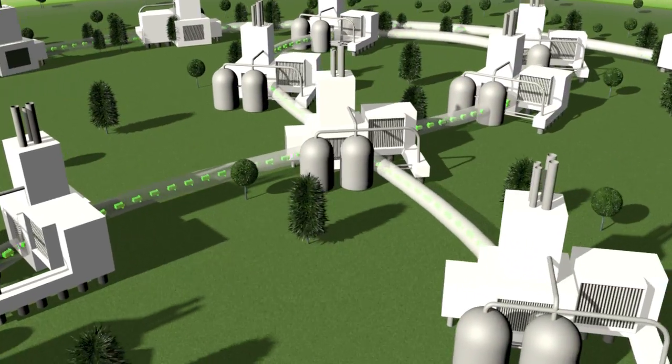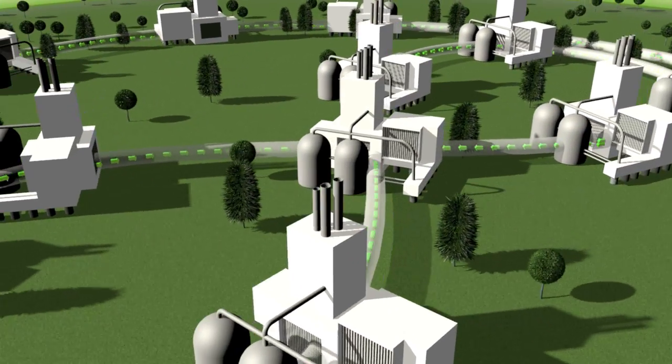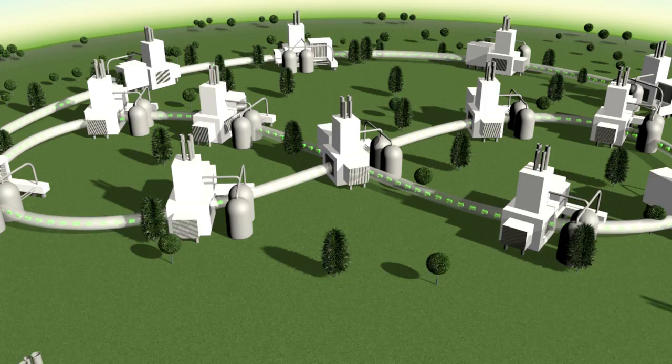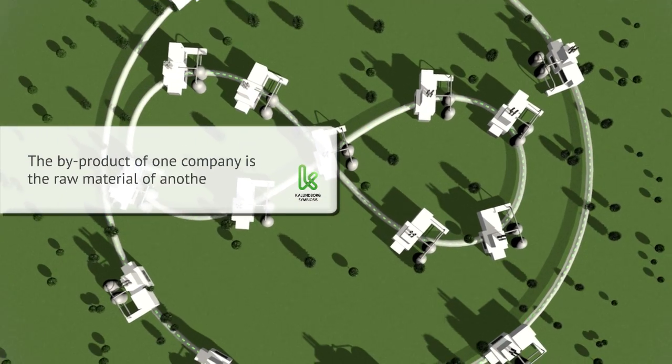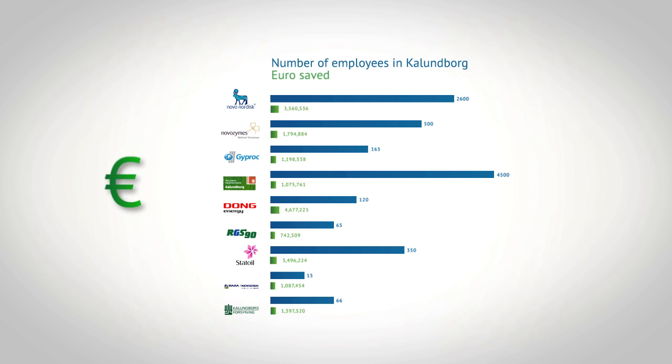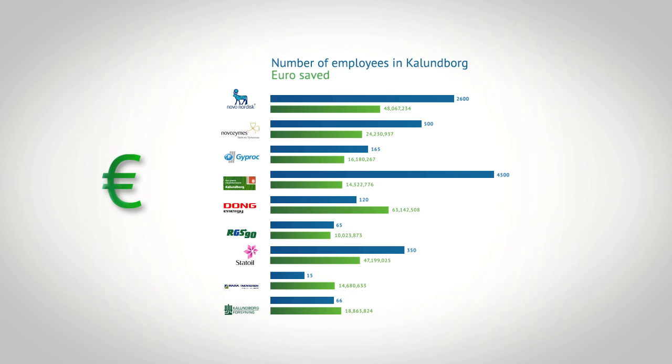Here, residue and by-products flow in a minutely orchestrated system of production, where the by-product of one company is the raw material of another company. Through this cooperation, the enterprises achieve an economic advantage, since all agreements in the symbiosis are based on sound business as well as environmental principles.